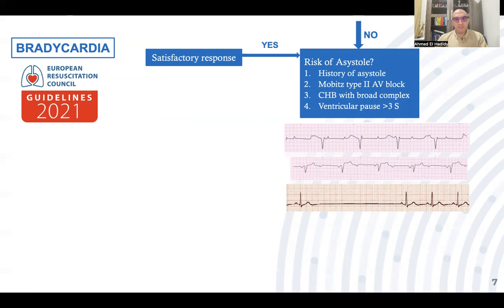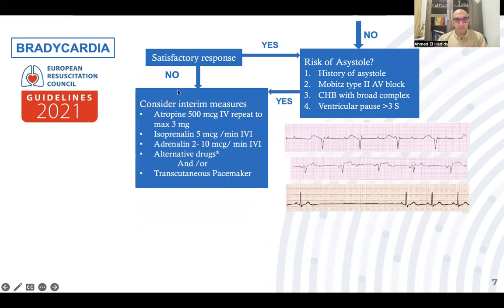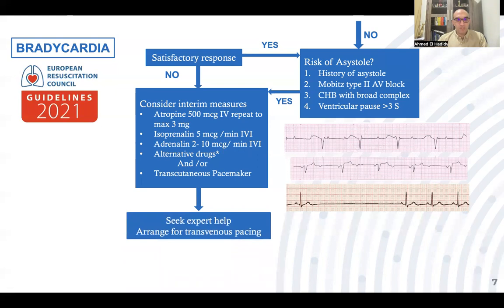If any risk of asystole is present, or if there is no satisfactory response to atropine, consider interim measures: repeat atropine 0.5 mg IV up to a maximum of 3 mg, medications such as isoprenaline 5 mcg/min or adrenaline 2–10 mcg/min, other alternative drugs, and/or consider transcutaneous pacemaker — until expert help is sought and a transvenous pacemaker is arranged.